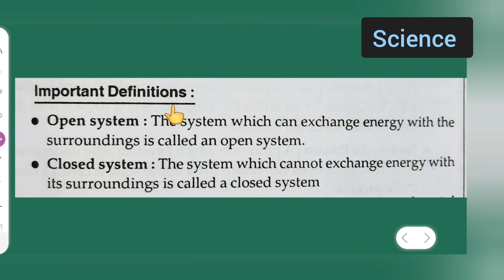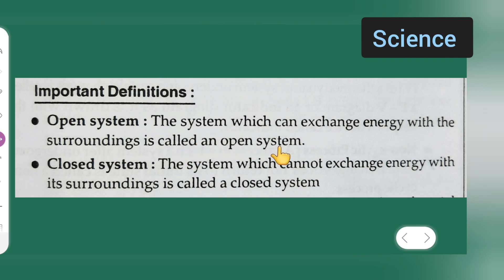The open system is the system which can exchange energy with the surrounding. So what is the open system? The system which can exchange energy with the surrounding is called an open system.